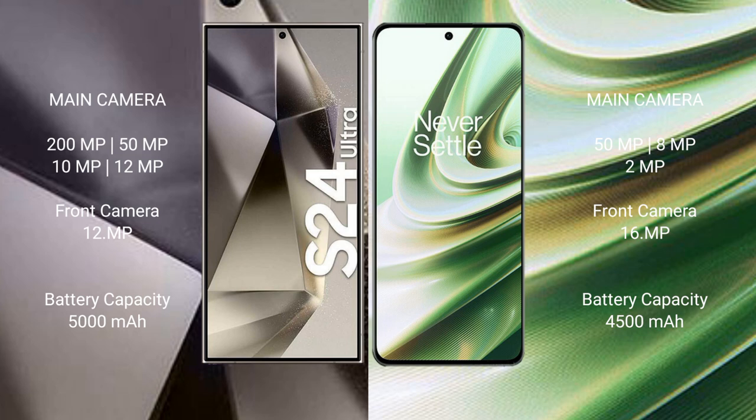Samsung Galaxy S24 Ultra features a quad camera setup: 200MP + 50MP + 10MP + 12MP, with a 12MP front camera. OnePlus 10R features a quad camera setup: 50MP + 8MP + 2MP, with a 16MP front camera.